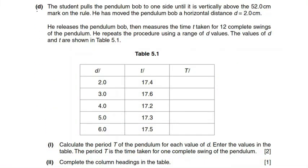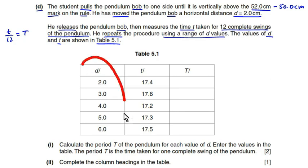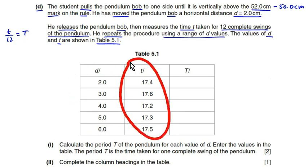Part d says the student pulls the pendulum bob to one side until it is vertically above the 52.0 centimeter mark on the rule — a horizontal distance d equal to 2.0 centimeters. This makes sense because previously the bob was above the 50 centimeter mark. He releases the bob then measures the time small t taken for 12 complete swings. He repeats the procedure using a range of d values. The values of t and small t are shown in table 5.1.